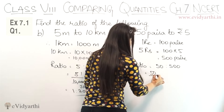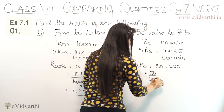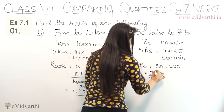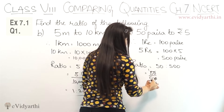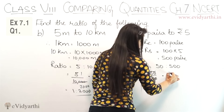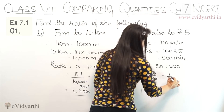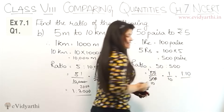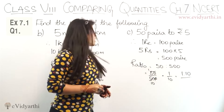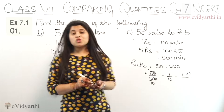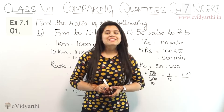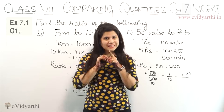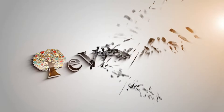We can write it as 50 upon 500. The zeros cancel, giving 1 and 10. So the answer is 1 upon 10, which is 1 ratio 10. That was question number 1 of exercise 8.1.